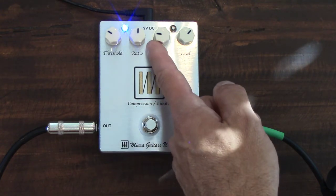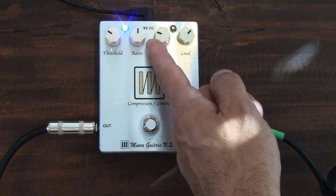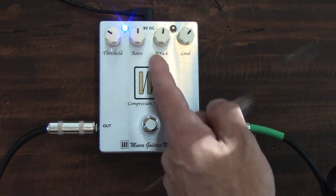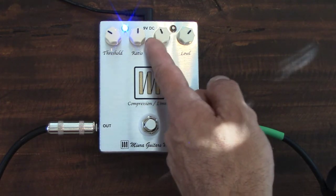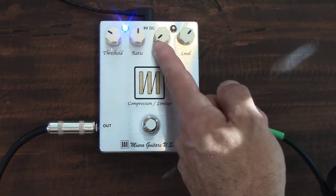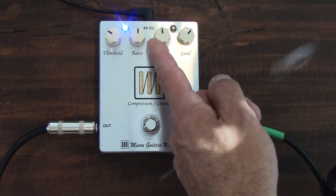The attack knob is when the compressor actually begins. Is it right at the beginning of the note or does it let the transient through a little bit so they have a little extra punch? So it just depends on what you want to do with this. Sometimes if you want a more dramatic effect, you have the attack very short and you almost get a little distortion coming in. If not, more natural sound probably around 12 o'clock.